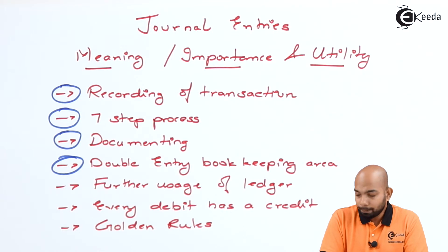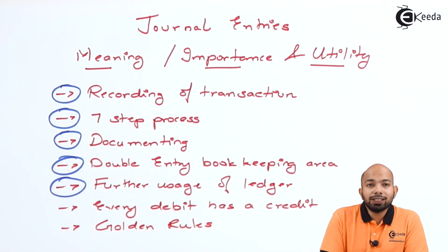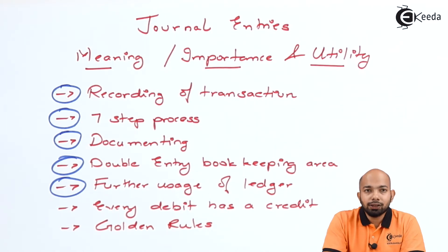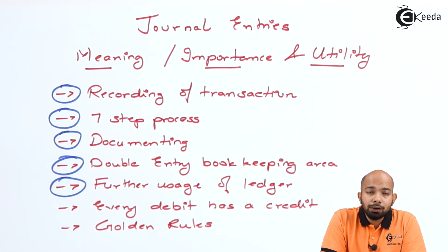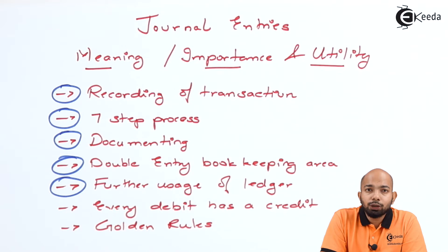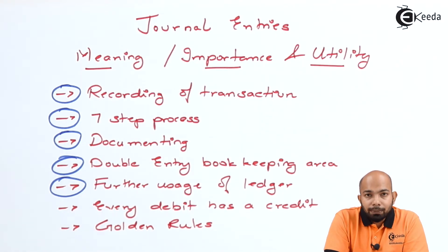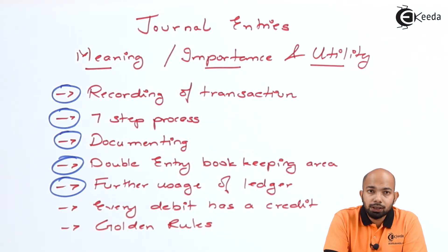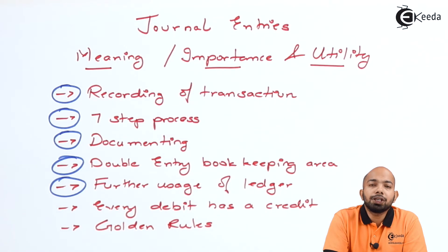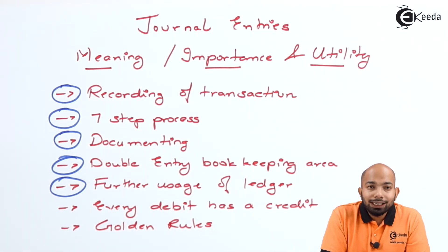Recording transactions is one part; however, classifying and summarizing them is the next part. Unless and until you have journal entries recorded, you won't be able to classify and summarize. If you're not able to classify transactions under groups, you won't be able to evaluate the trial balance, which means no profit and loss account and no balance sheet will be prepared. Hence, recording transactions is further used in preparation of ledger balances, which are classified under groups like purchase, sales, expenses, and income, then provided as a trial balance used for preparation of profit and loss account and balance sheet.